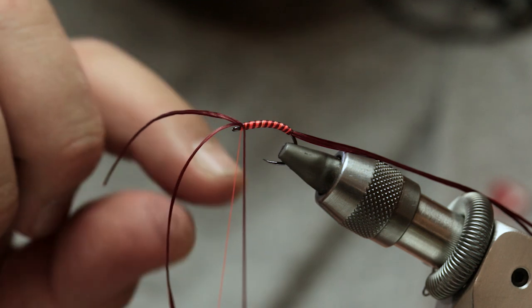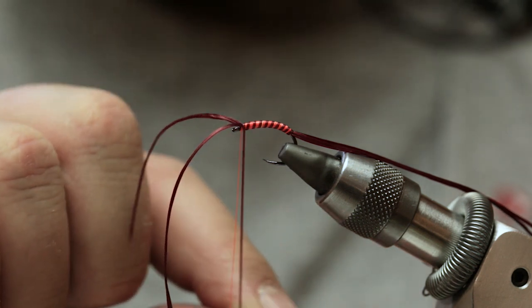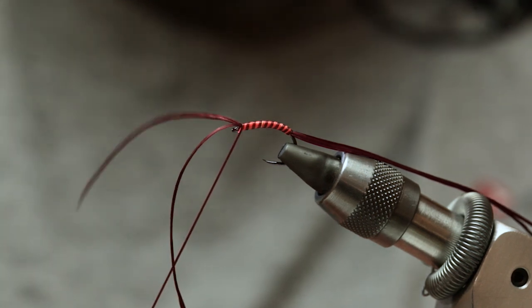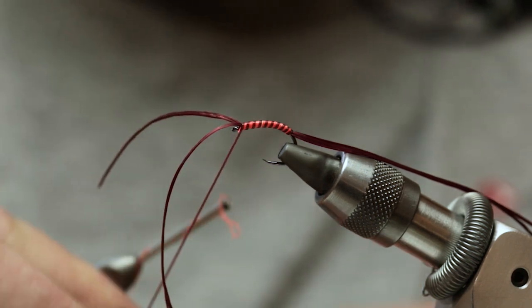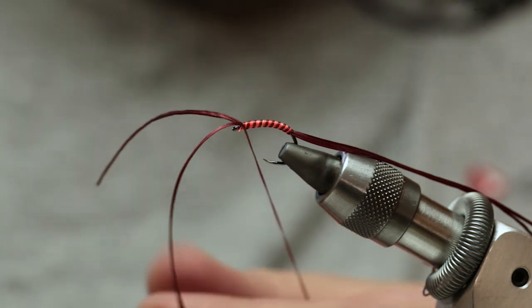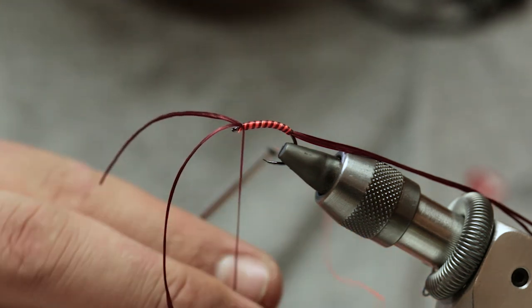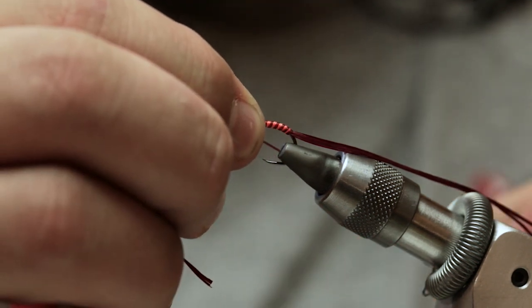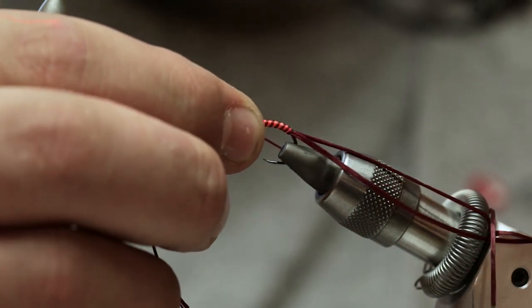And then same with the rib, come underneath, behind the thread. Come up with the thread and break. So just keep everything tight now at this point there. If you've got a material spring, hold the rib, tuck it in the material spring.